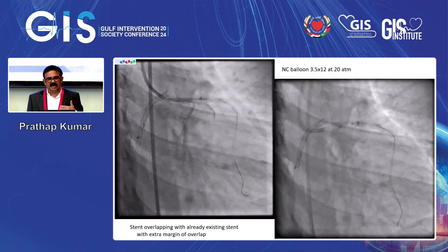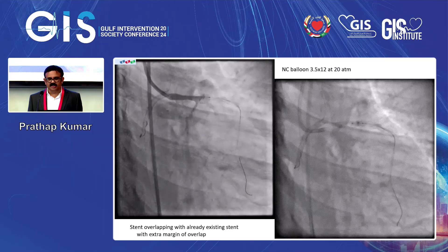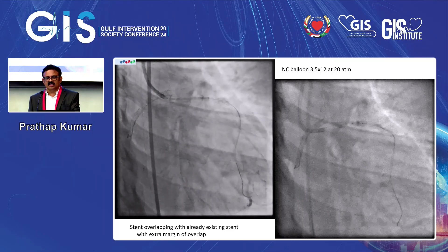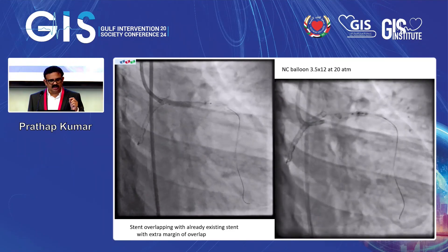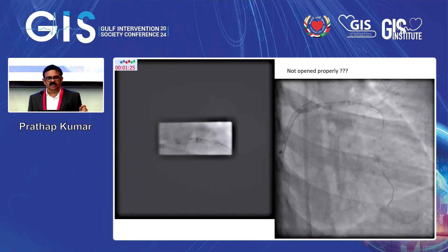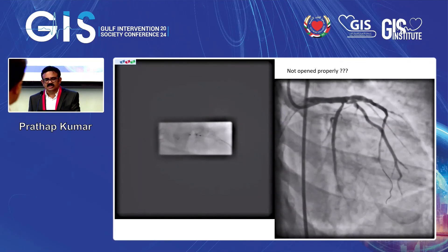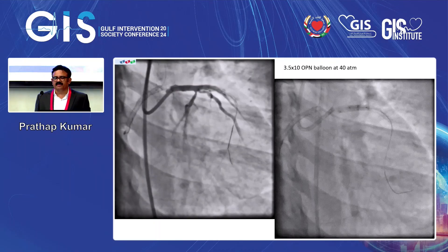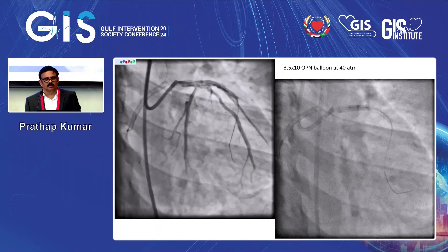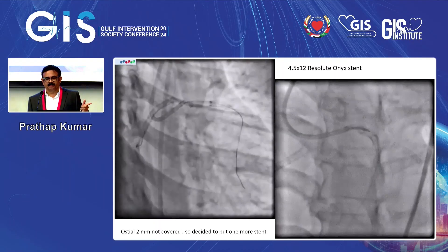My unluck — the NC balloon had a malfunction, would not inflate. You can see that part is not opened up. The overlapping stent with the already existing stent was not opened up. So I took a 3.5x10mm OPN balloon, went up to 40 atmospheres, and it opened up.